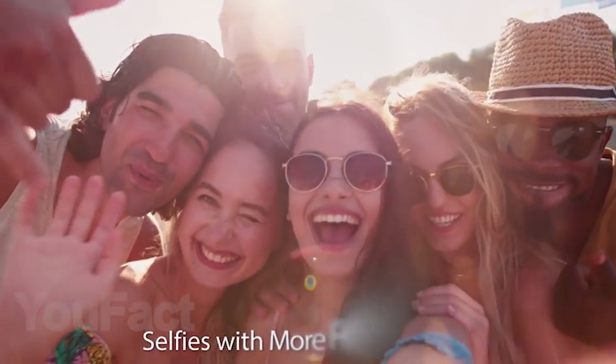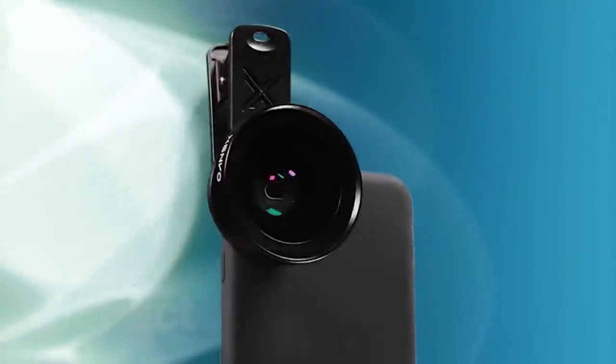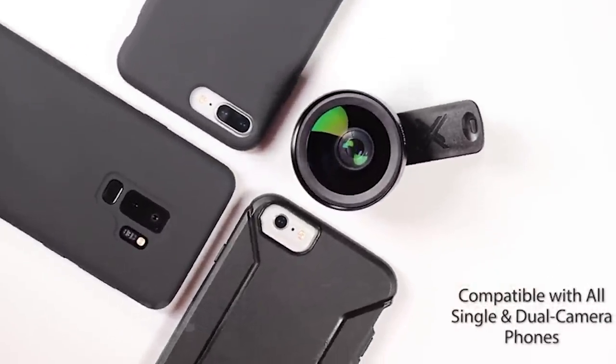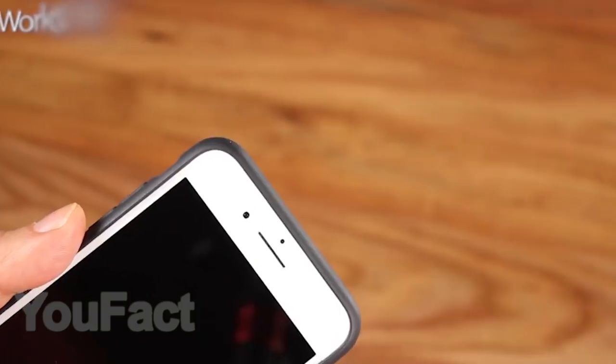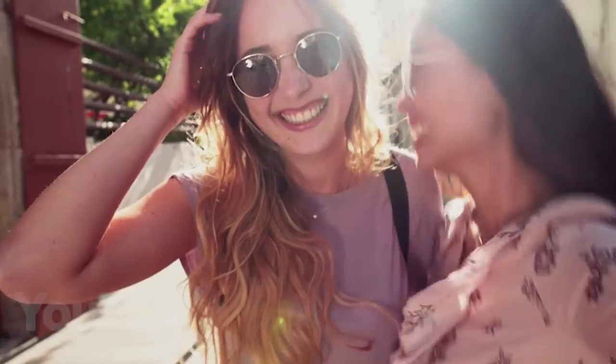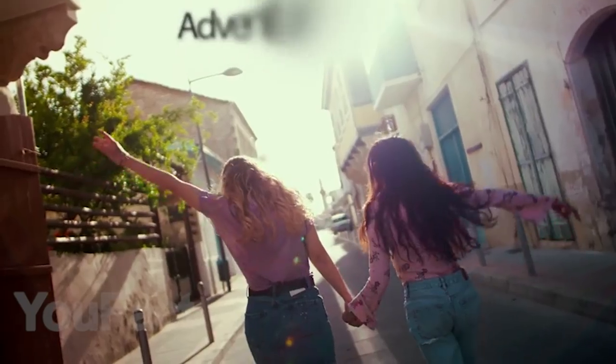And speaking of quality photos, next up is the compact lens set from Zenvo, which fits both selfie and rear cameras and is compatible with all single and dual camera phones. These lenses are crafted from aircraft-grade aluminum and premium optical glass for durability and clarity, along with minimizing ghosting, reflections, lens flare, and other unwelcome artifacts.